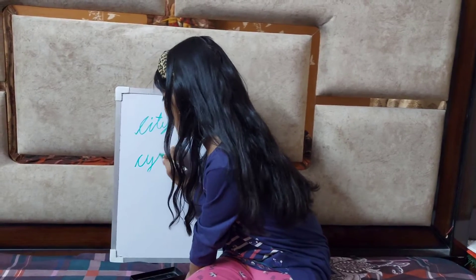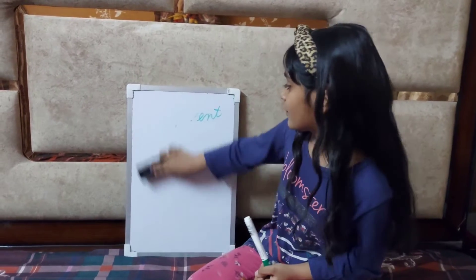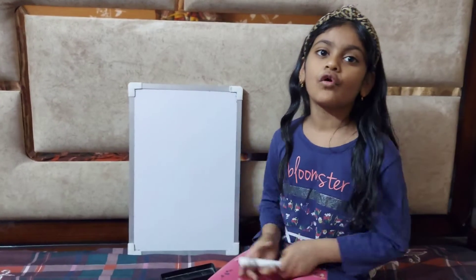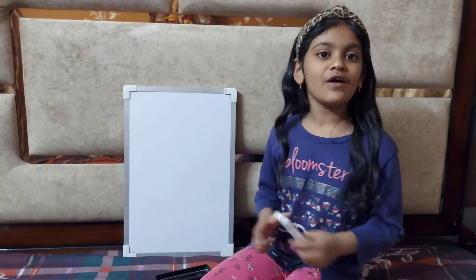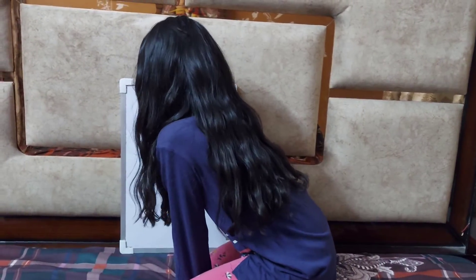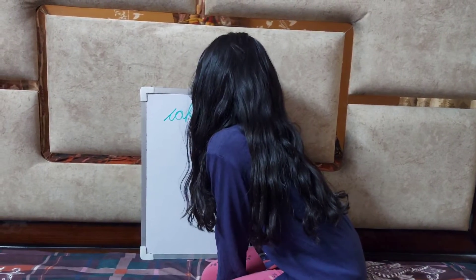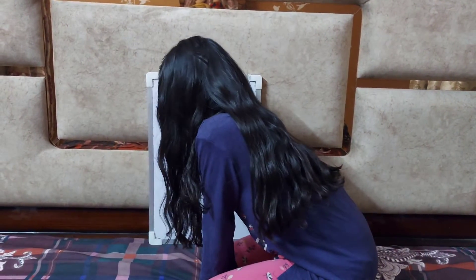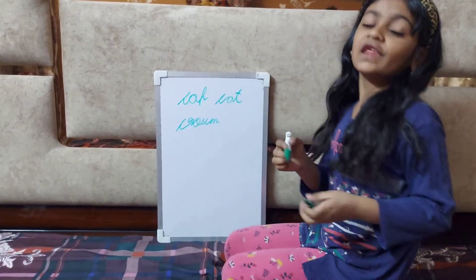And guys, whenever the letter C comes before any other letter in the alphabet, it always pronounces Ka. Like: cap, cat, crown.